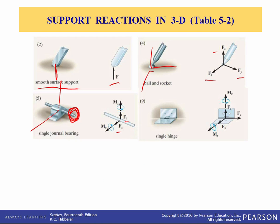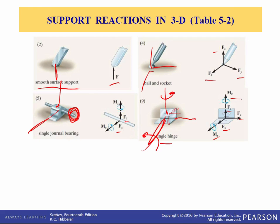If you try to twist the journal bearing about the z-axis it wouldn't move, and likewise for the x-axis. A single hinge prevents translation in all three directions so we have forces for those, but it can't support a moment about one axis while it can support moments about the other two axes. You can imagine trying to spin the hinge about those axes and it won't move, so we have those two applied couple moments as support reactions.